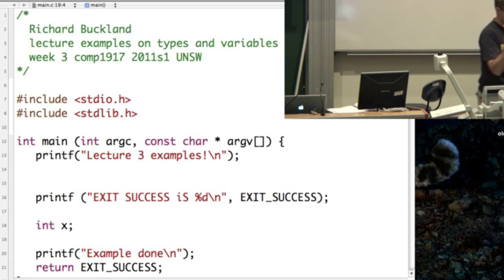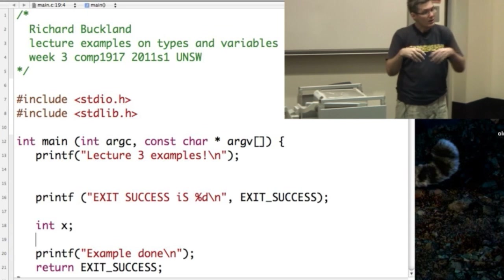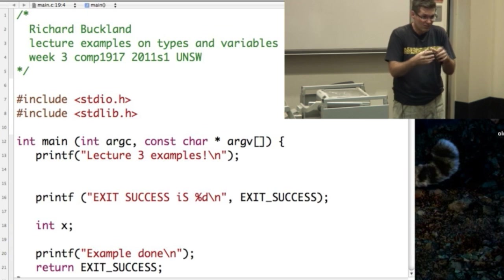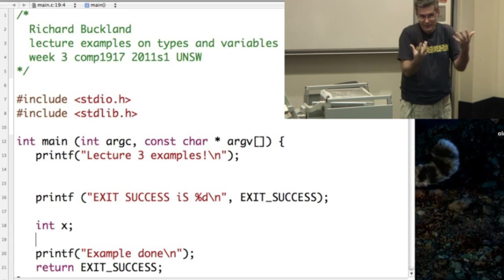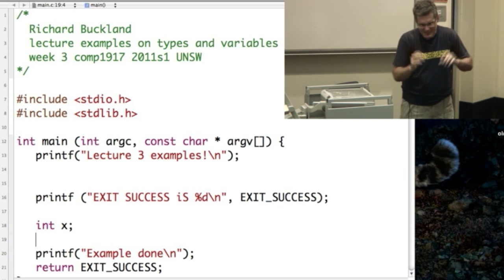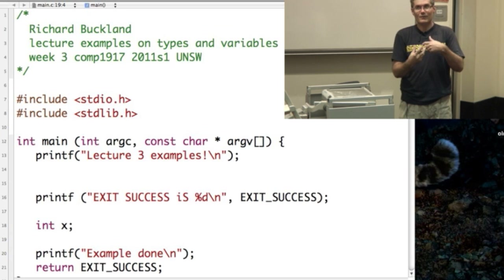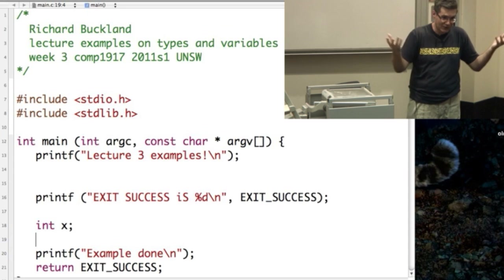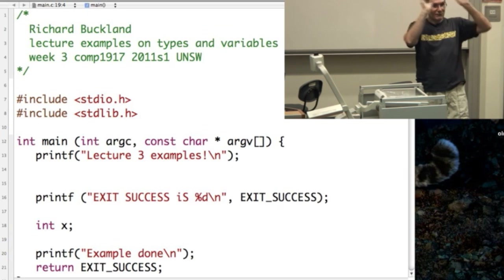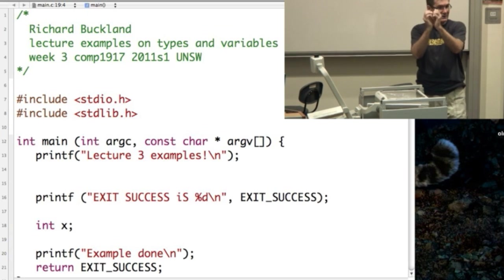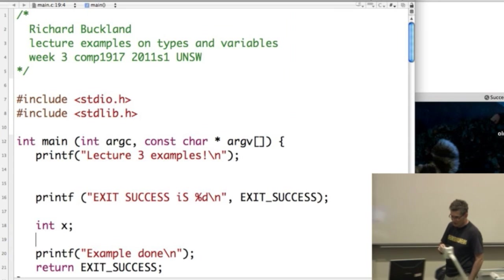Because maybe exit success isn't zero on every system. Now, someone's going to say, oh, I'm sure it's always defined to be. But you can use C to write programs on crazy chips, on washing machines. It doesn't have to be on computers. So maybe they have different notions of what exit success would be. I don't think exit success would ever change. I'm pretty sure it's enough of a convention that everyone always expects it to be zero, that it always will be. But someone might have a crazy idea one day of making it different.